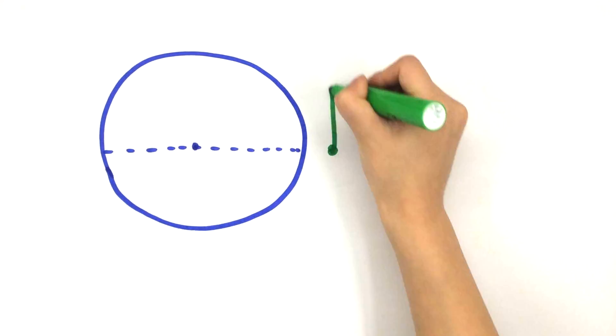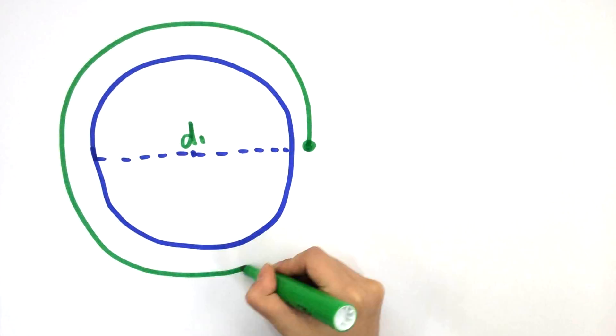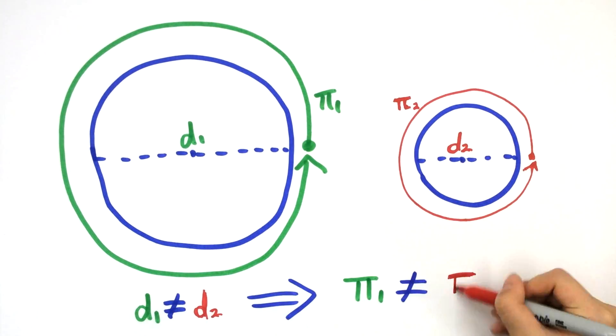Pi, from the Greek words parametros and peripheros, represented the circumference of a given circle. But because the circumference of a circle changes as the diameter changes, the value of pi was different for every circle.